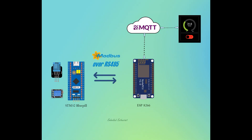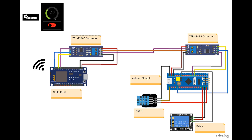In this video we are trying to send DHT11 sensor data from an STM32 blue pill to an ESP8266 NodeMCU over Modbus. That data gets forwarded to an MQTT server and the sensor value is displayed. We are also trying to get a control signal from the MQTT client dashboard, which is received by the ESP8266 and forwarded to the STM32 blue pill over Modbus to control a relay.